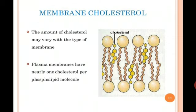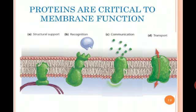Another constituent of the cell membrane is cholesterol, shown here in yellow. The amount of cholesterol may vary with the type of membrane. The plasma membrane has nearly one cholesterol molecule per phospholipid molecule, as you can see in the figure with each phospholipid molecule accompanied by one cholesterol molecule.